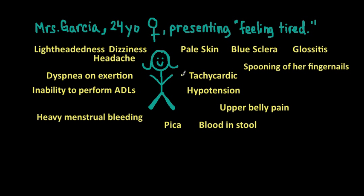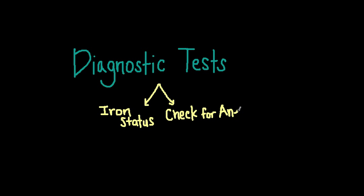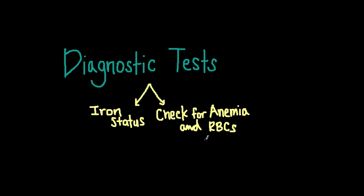Now let's discuss laboratory tests used to diagnose this disease. There is no single test that identifies iron deficiency anemia — it's a combination of tests. The most common are hemoglobin, which is the concentration of hemoglobin in whole blood, and hematocrit, which is the fractional volume of whole blood that red blood cells occupy. These tests help determine the severity of anemia. If values are extremely lower than normal, that indicates the iron deficiency has been developing over a longer period of time.